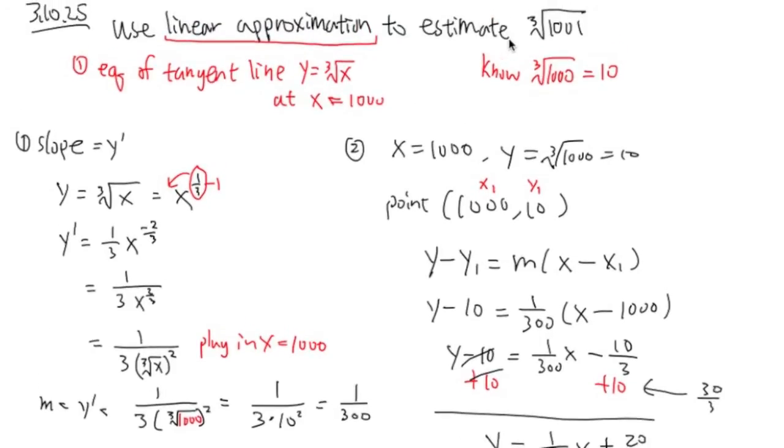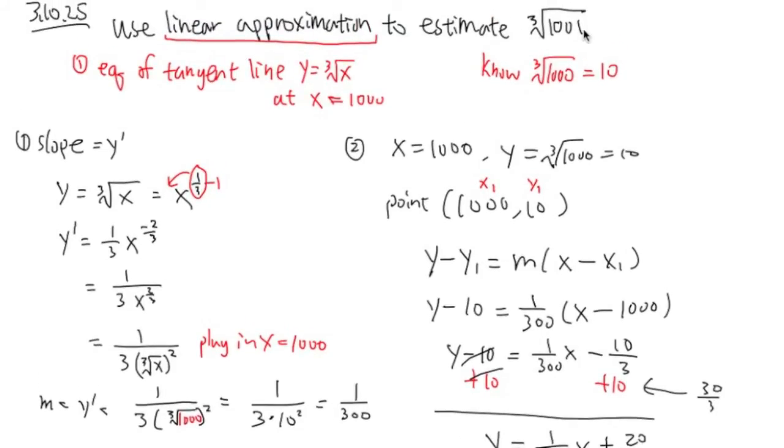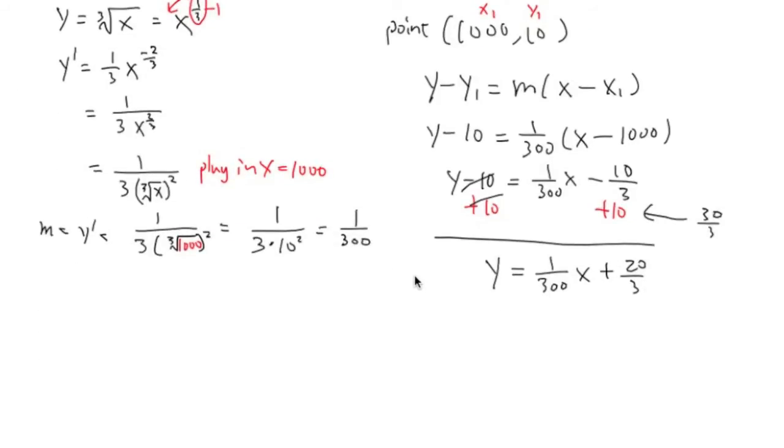But what we want is, we want to get an estimation of cube root of 1001. So, we are going to use, I will just say use, this tangent line. And then what we are going to do is plug in x equals 1001 into here, and then do our regular computations. So, we are going to end up with the cube root of 1001. It's going to be approximately 1 over 300 times 1001 for the x value plus 20 over 3. And you see the beauty right here. This is something that we can actually work out by hand.